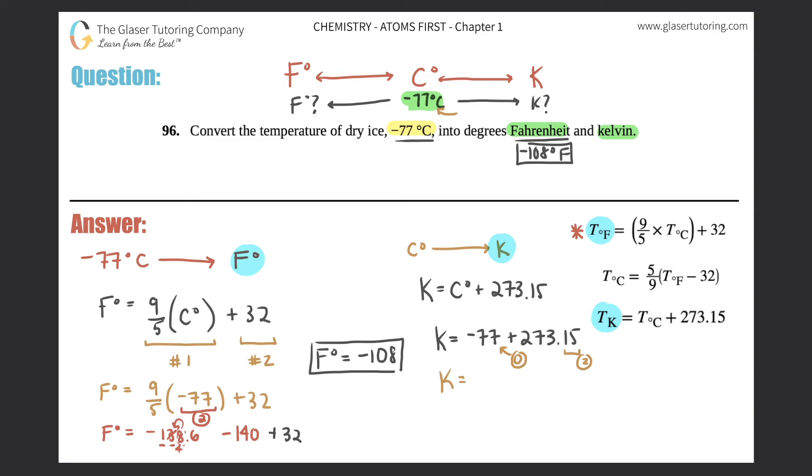So our answer should have no numbers after the decimal. So if I do negative 77 plus 273.15, you get 196.15. But we got to stop here because I can't have anything after the decimal. The one tells me that the six will stay, so the Kelvin temperature would be 196. So I have 196 degrees Kelvin. Box that answer off.